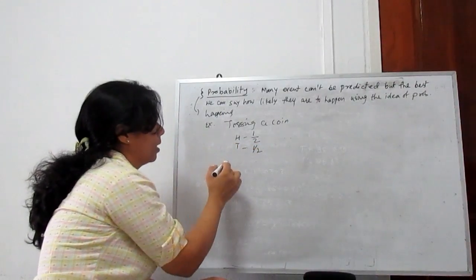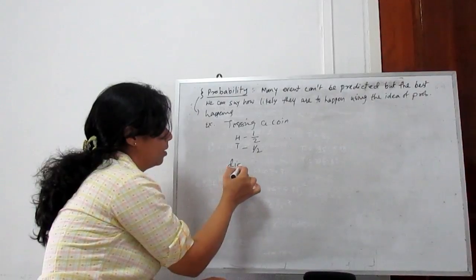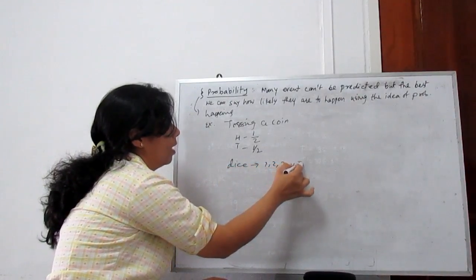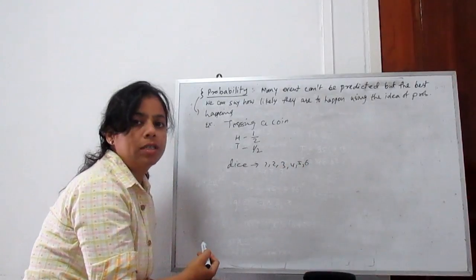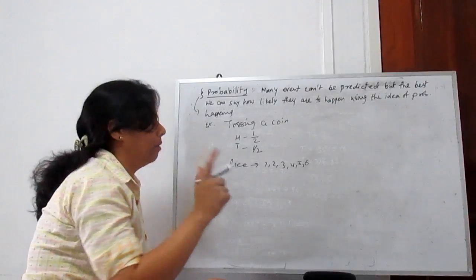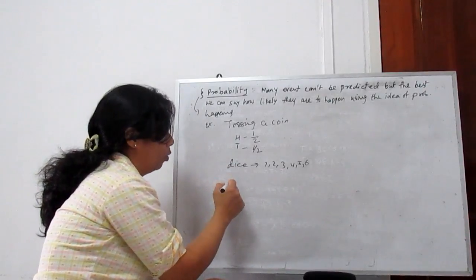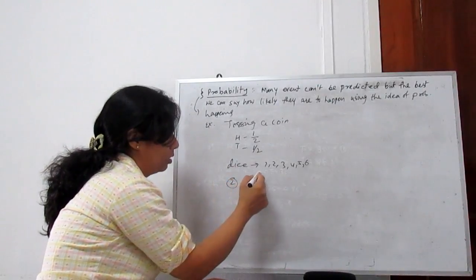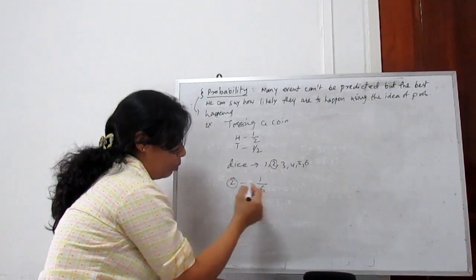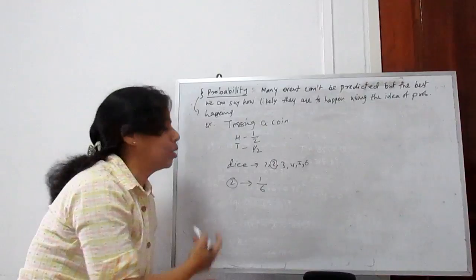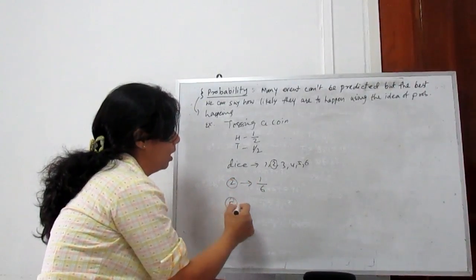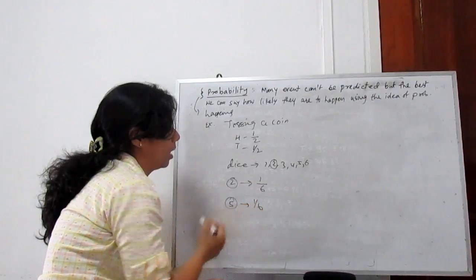Similarly, if we are taking a dice, there are 6 faces: 1, 2, 3, 4, 5, and 6. So what is the probability if we throw a die one time and we want to get 2? For 2, there is only 1 number, and the total outcome is 6, so the probability to get 2 is 1 by 6. Probability to get 5 is also 1 by 6.